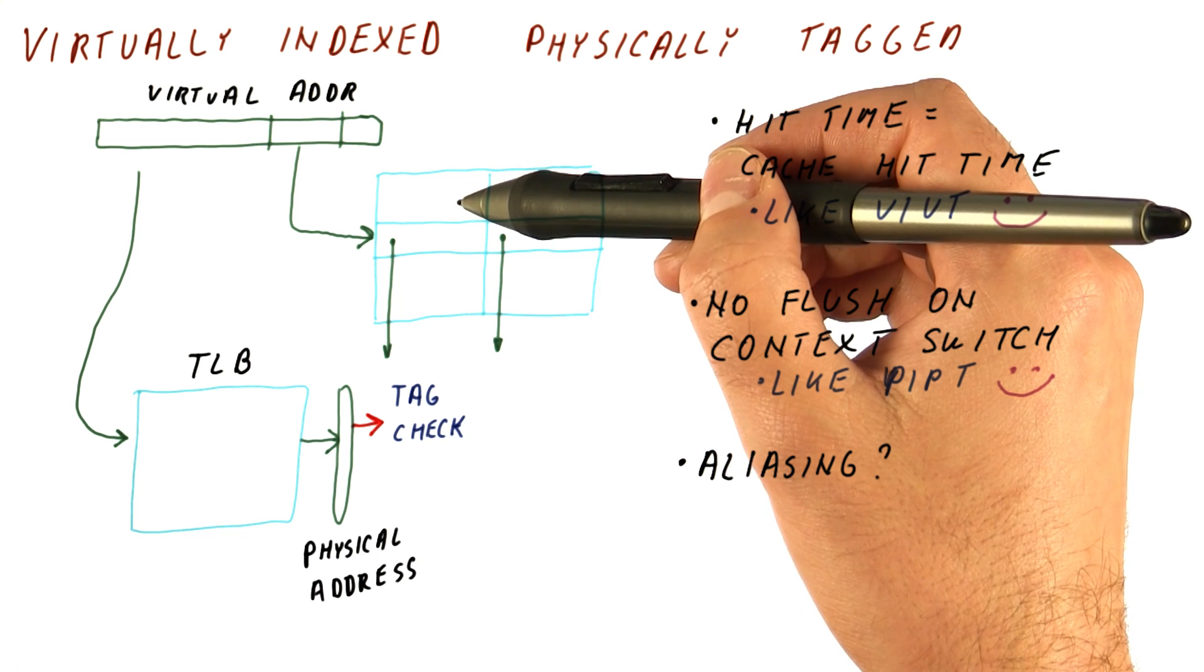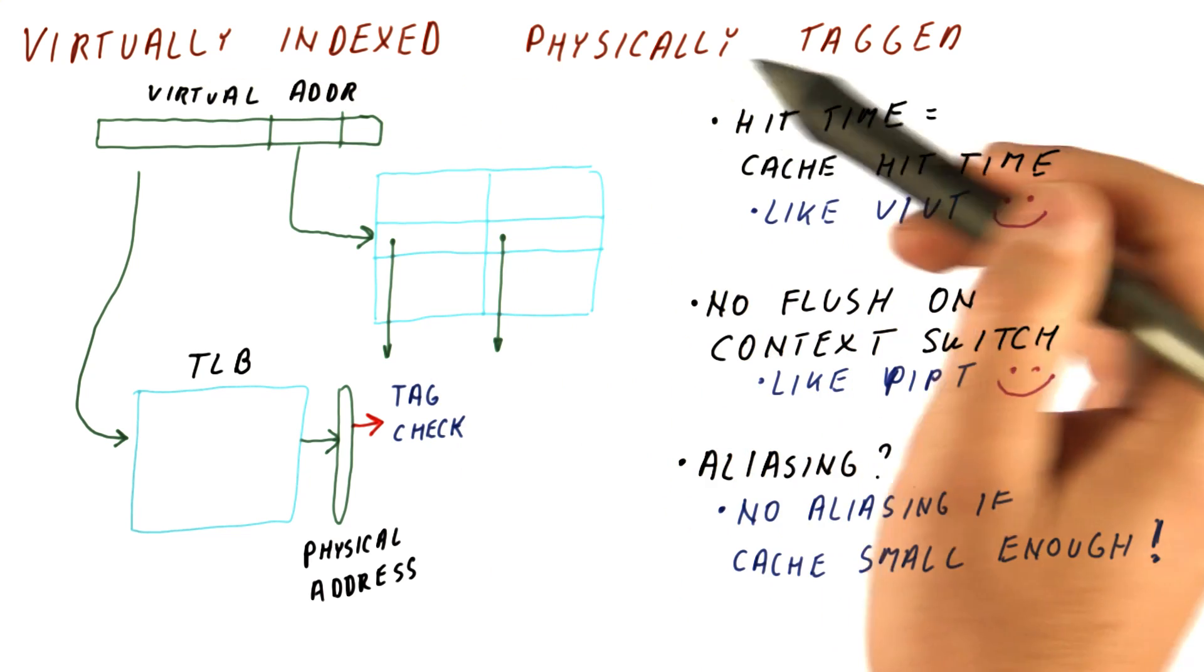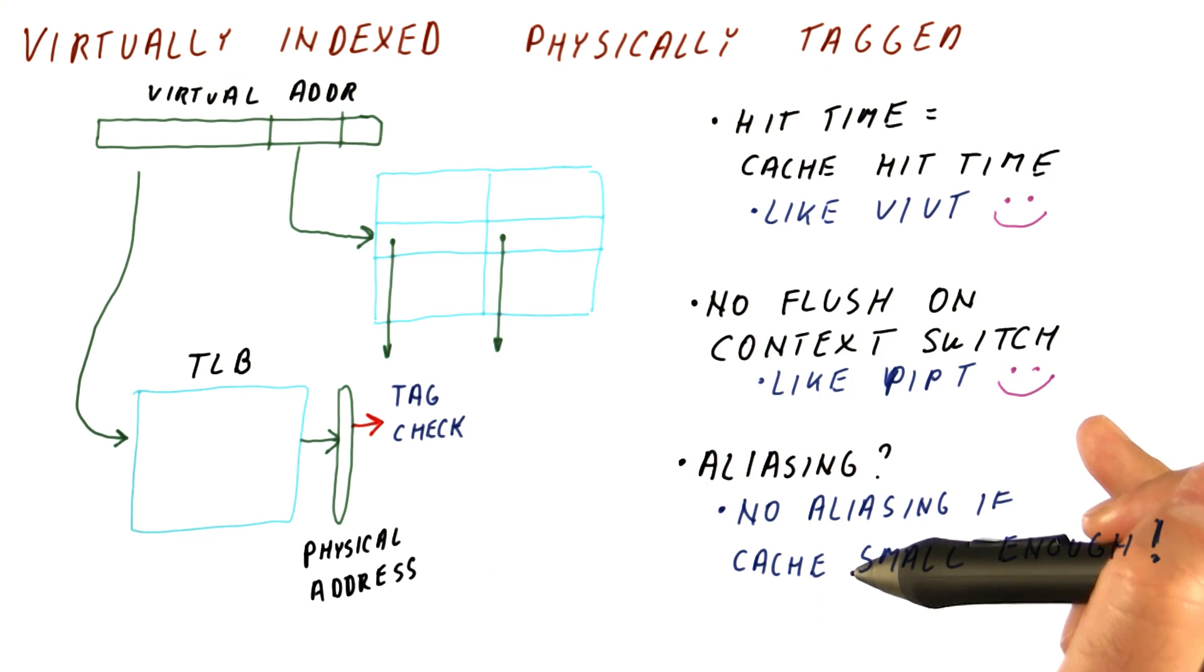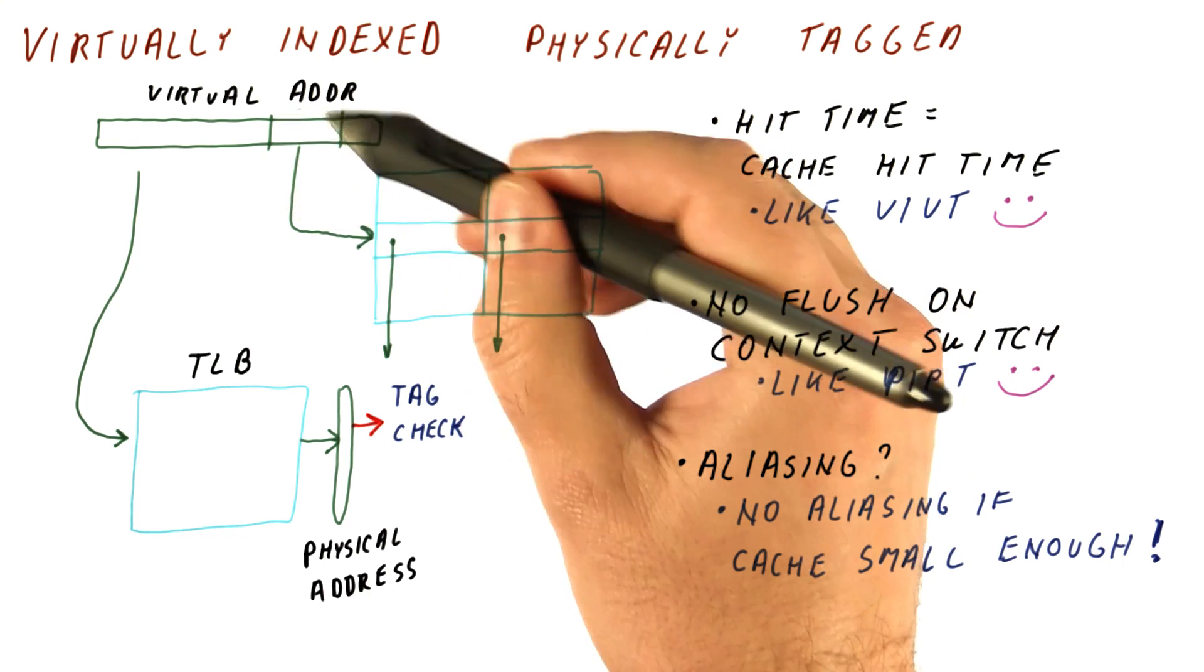Thus, a write to one will not be seen by the other. It turns out that there are no aliasing problems in the virtually indexed physically tagged cache, as long as the cache is small enough. And it has to do with where the index bits are coming from.